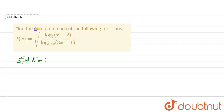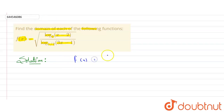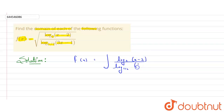Hello everyone. In this question we have to find the domain of the function. The function f(x) is given by the square root of log base 2 of (x minus 2) divided by log base one-half of (3x minus 1). So this is the function given to us.